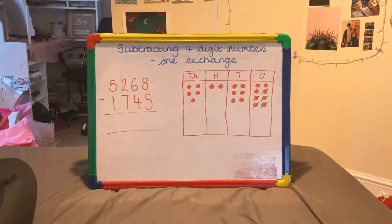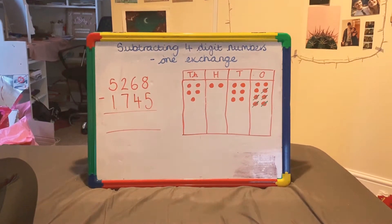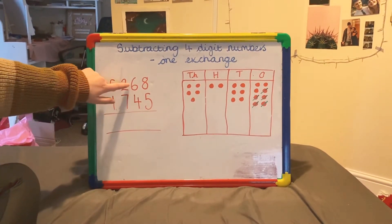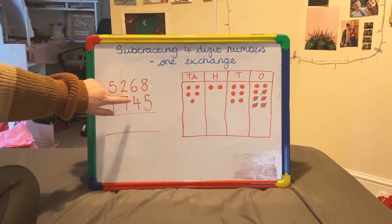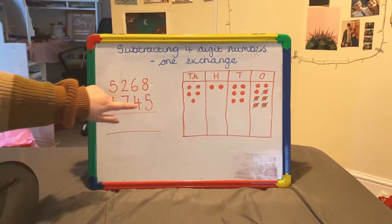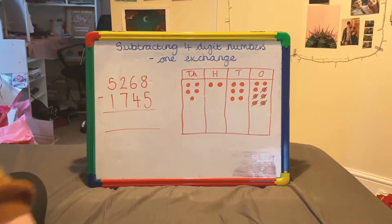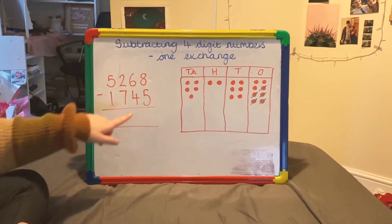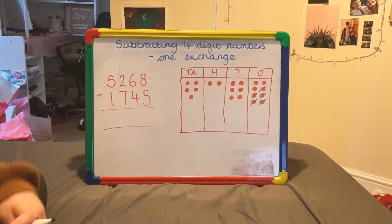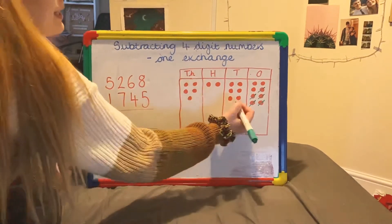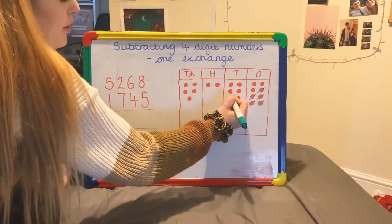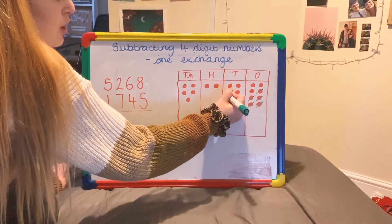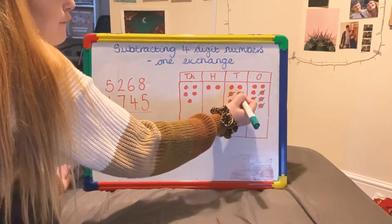Now we can move on to the tens column. It says 6 take away 4. So I go to my tens column and I'm taking away 4 tens, taking away 4 of those circles: 1, 2, 3, 4.